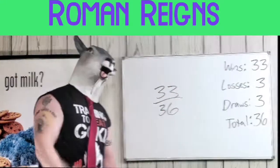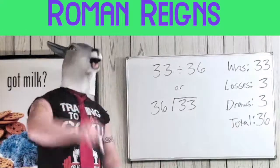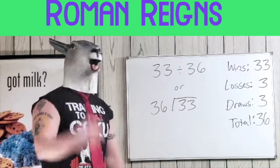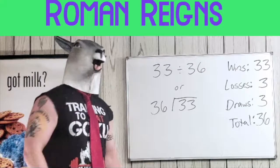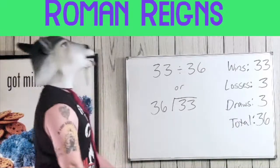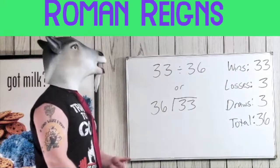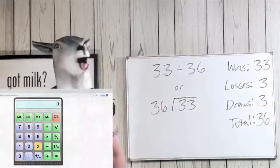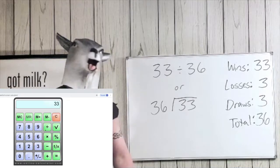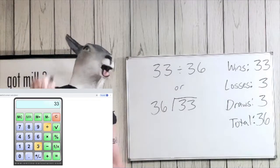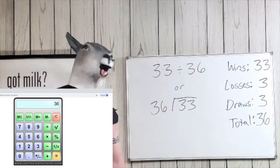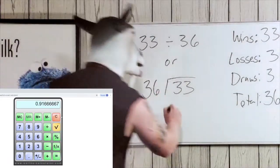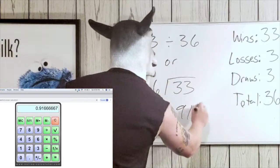We're gonna turn it into a division problem one more time for the kids in the back. We have 33 divided by 36. Let's get that in the calculator — 33 divided by 36 — and boom, there you go. It's 0.916.